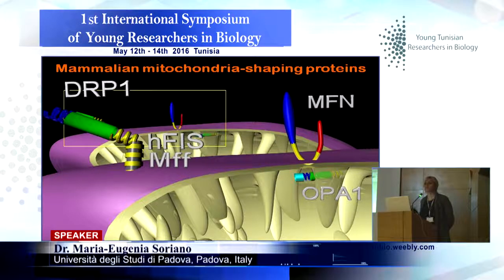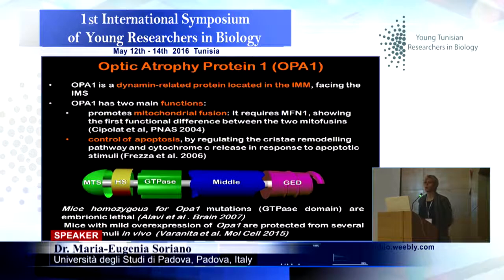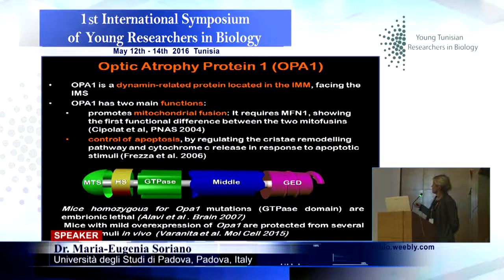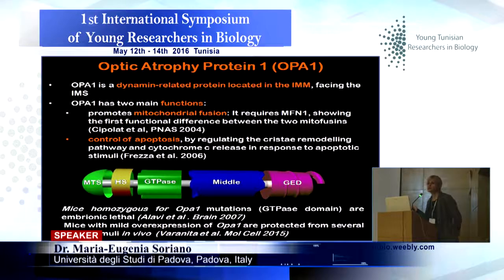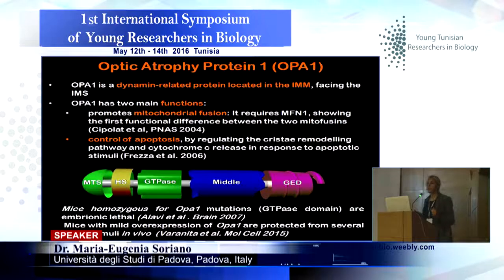These proteins are very important because many mutations are associated with neurological disorders. Let me speak a bit more about OPA1 — optic atrophy protein 1. OPA1 is a dynamin-related protein located in the inner mitochondrial membrane facing the intermembrane space. It has two main functions: it has a role in pro-fusion, inducing mitochondrial fusion, and it also controls apoptosis by regulating the cristae remodeling pathway.